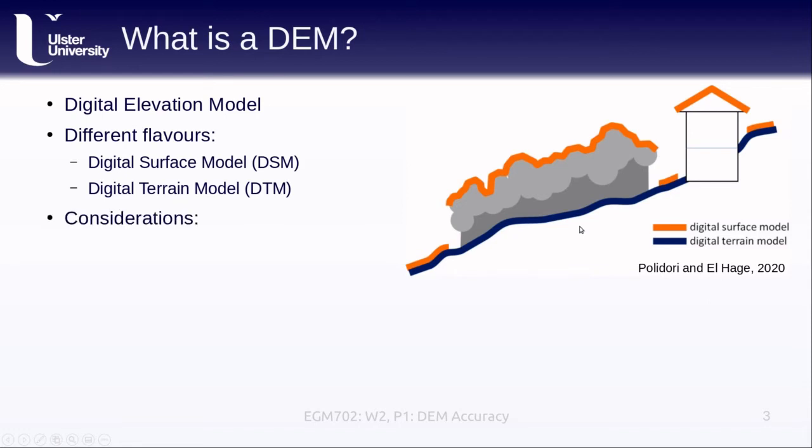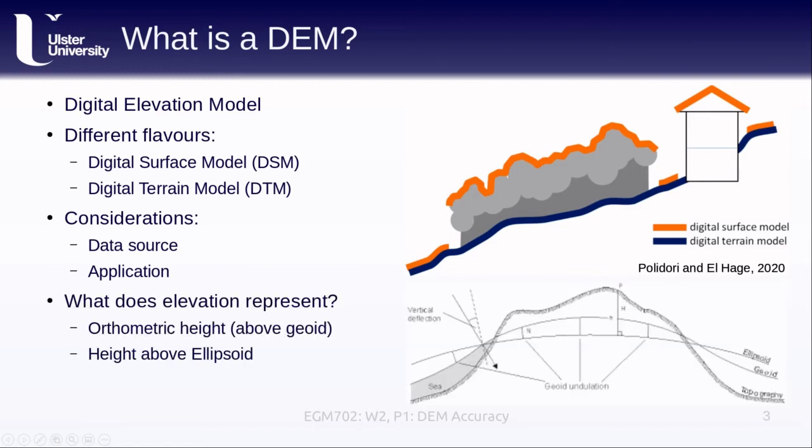We also have different considerations to work with. We might have different data sources. If we're working with air photos, we're going to be generating surface models. If we're working with LiDAR, we might be generating terrain models. Depending on what data we're using, we're going to have different surfaces that we end up working with. We might also have different applications for our DEMs, and so we need to consider what our applications are before we start trying to find the data.